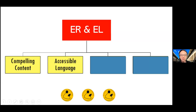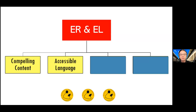Point number two, which is extremely important for language learning purposes: the language of the listening and reading materials will have to be accessible. It has to be at the student's level — slightly above is okay, slightly below is also okay. The most important thing is that the students are able to get the overall gist of the listening and reading materials. So I would use the word accessible language.